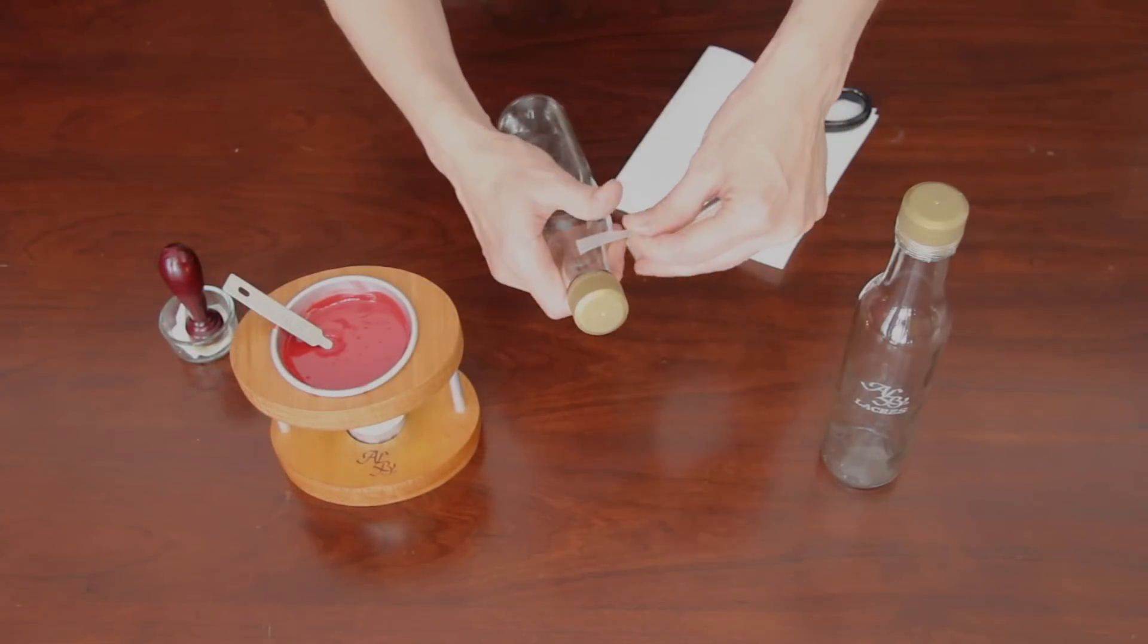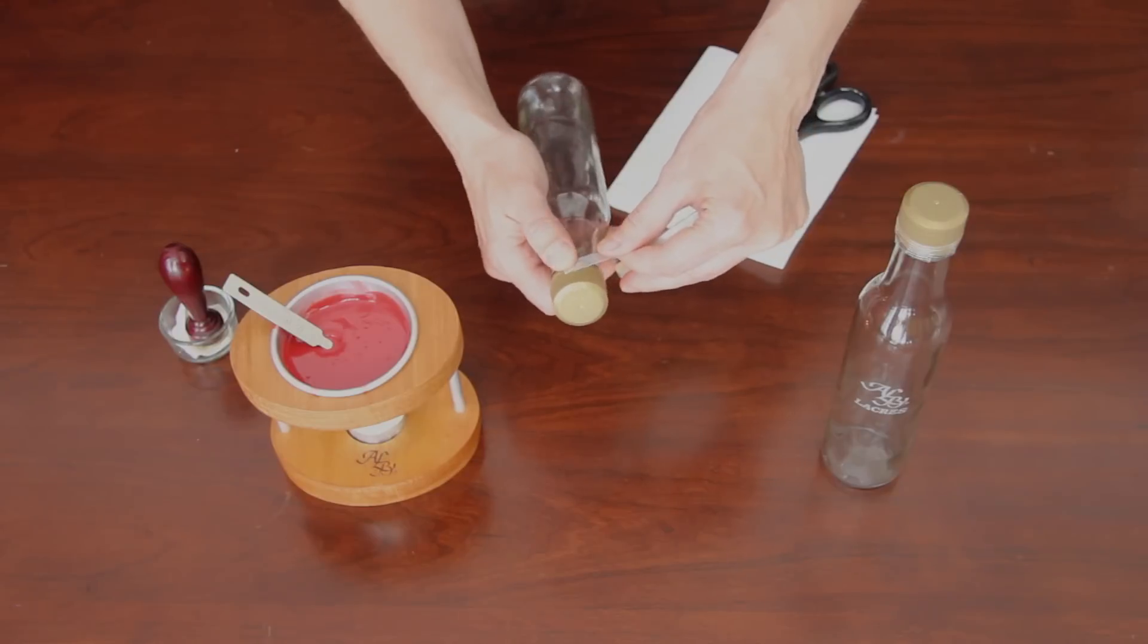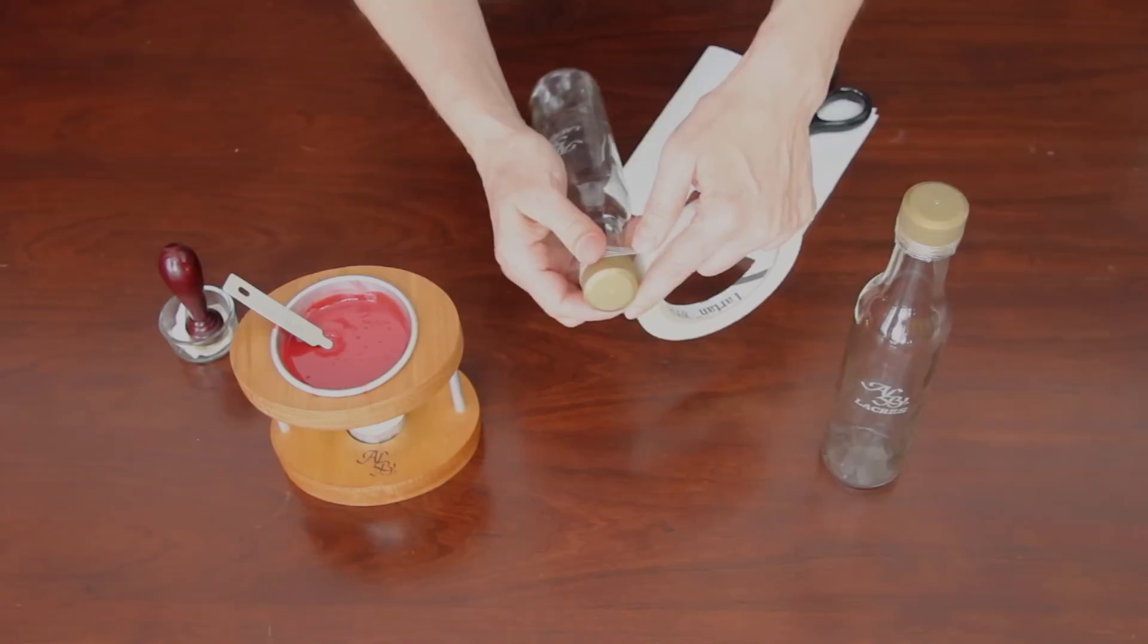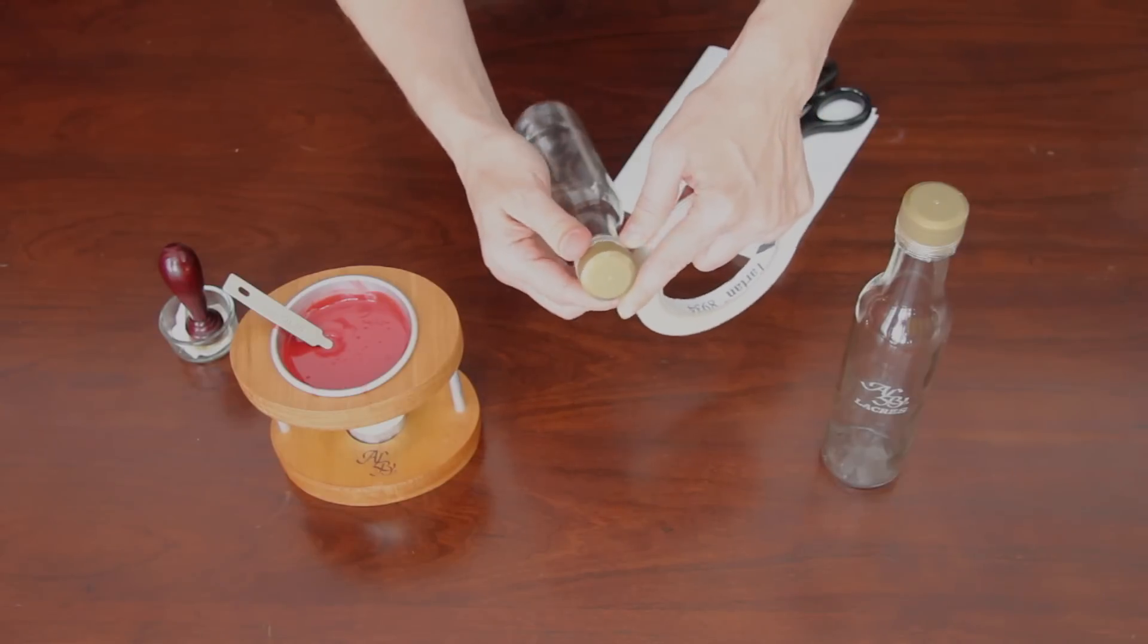As the wax melts, apply the filament tape on the bottles around the desired sealing area and bend the end to make a tab. You will pull the tab to break the wax capsule when opening the bottle.